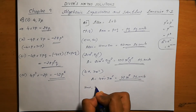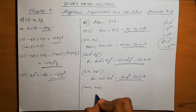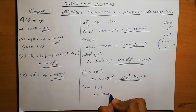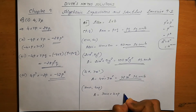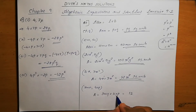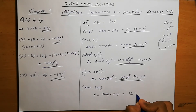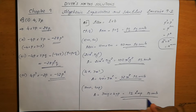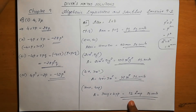Last one: 3mn and 4np. Area is equal to 3mn into 4np. 4 into 3 is 12. Then m, and n into n is n square. So we get 12mn square p square units.